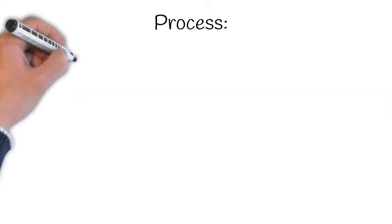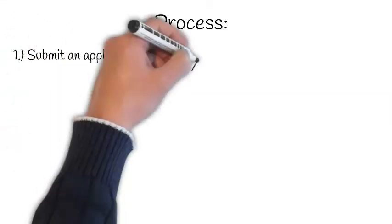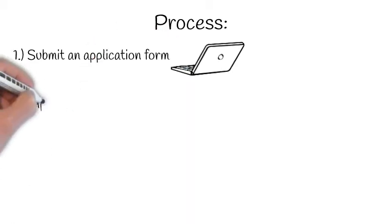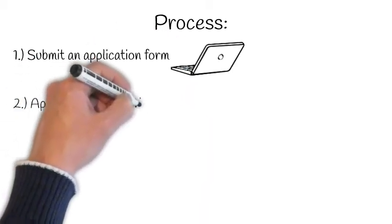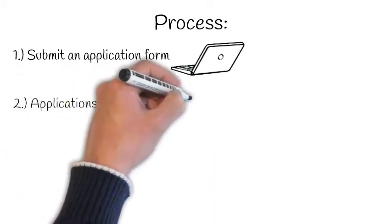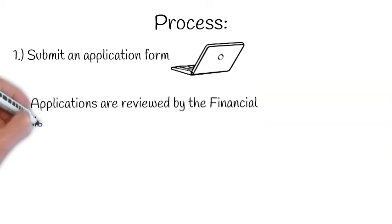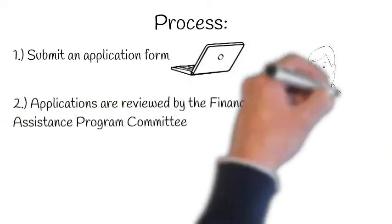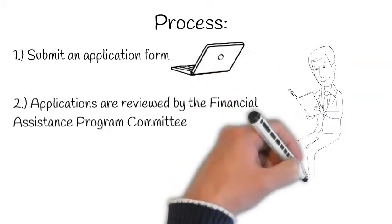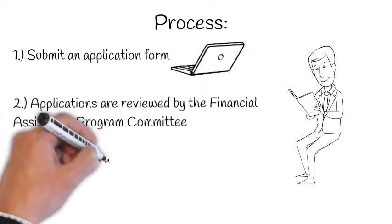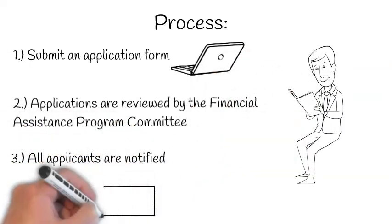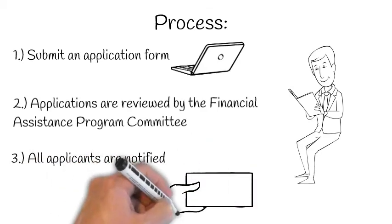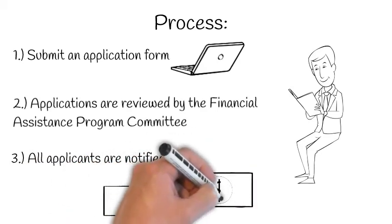The application process is very easy. First, complete an application form which can be found on the Grey Highlands website. Next, the Financial Assistance Program Committee will review all of the applications and make recommendations to Council. Council then decides whether to approve some or all of the recommendations. Once a decision is made, applicants will be notified on whether or not they will receive a grant.